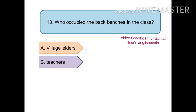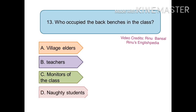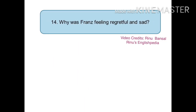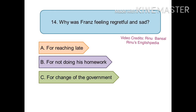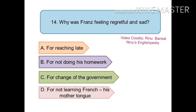The thirteenth question is: who occupied the back benches in the classroom? The options are (a) village elders, (b) teachers, (c) monitors of the class, or (d) naughty students. The right answer is (a) the village elders. The fourteenth question is: why was Franz feeling regretful and sad? The options are (a) for reaching late, (b) for not doing his homework, (c) for change of the government, or (d) for not learning French, which was his mother tongue.